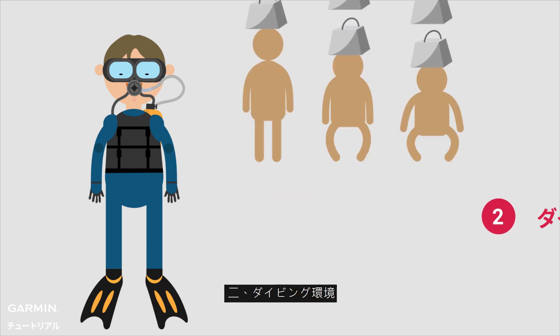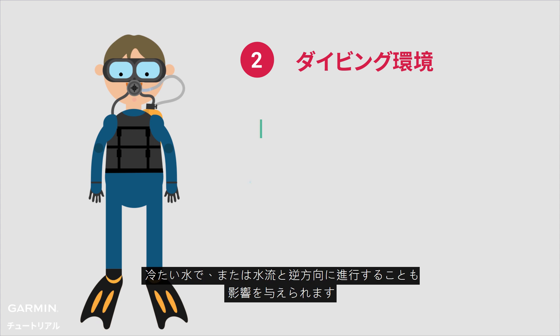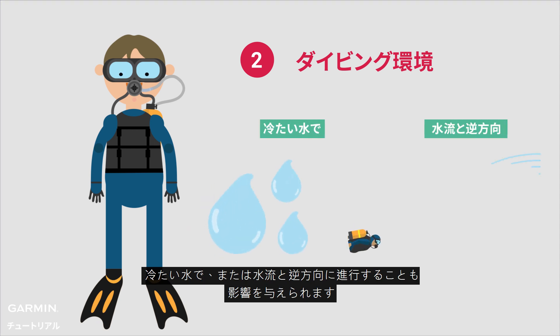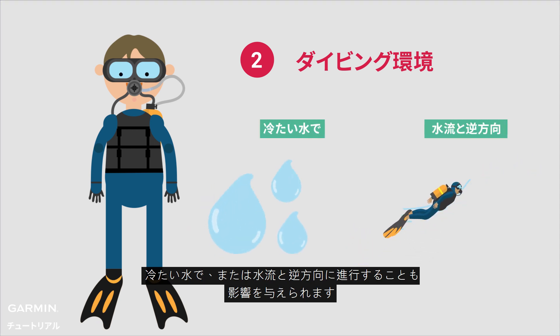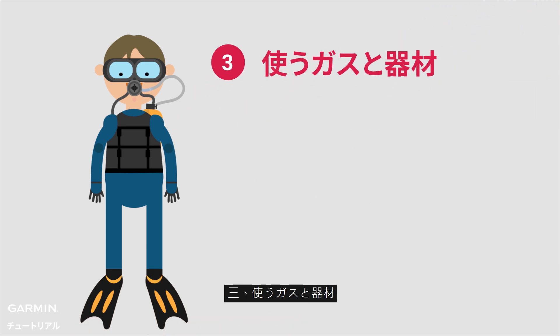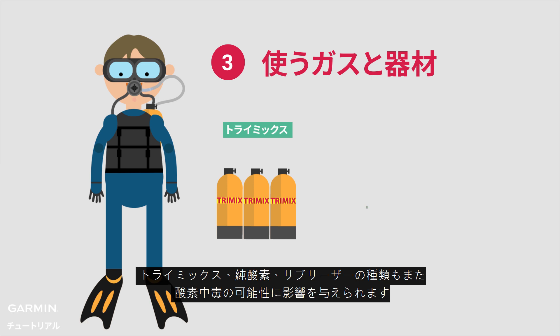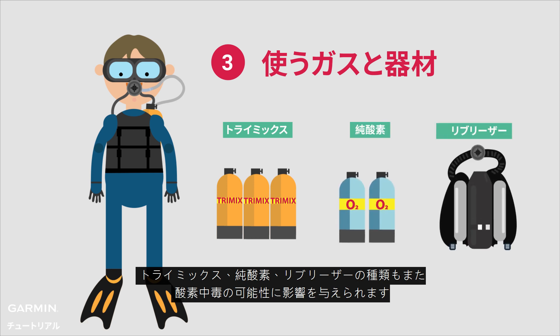Number 2: diving activities. For example, when you dive in cold water or your diving direction is against the water flow. Number 3: the gases and gear you use. For example, Trimix O2 or a rebreather.